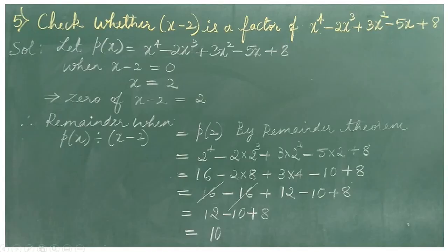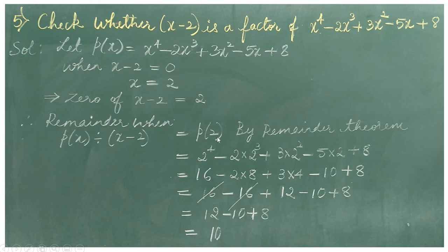Now, let's check whether x minus 2 is a factor of x raise to 4 minus 2x cube plus 3x square minus 5x plus 8. Let p of x be equal to x raise to 4 minus 2x cube plus 3x square minus 5x plus 8. When x minus 2 is equal to 0, solving the equation, we get x equal to 2. This implies the zero of x minus 2 is equal to 2. Using remainder theorem, the remainder when p of x is divided by x minus 2 equals p of 2.